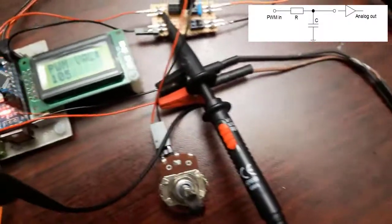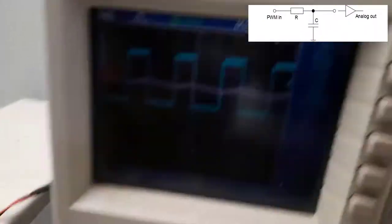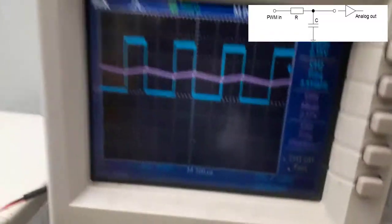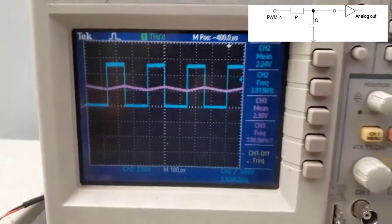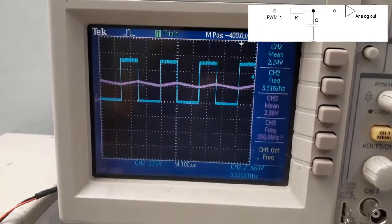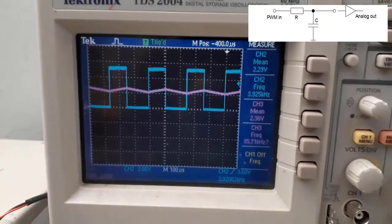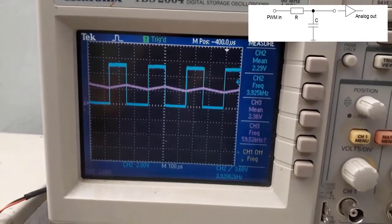If we go quickly under the scope here, we can see the PWM signal. We can see the PWM signal that is coming from the Arduino. That is a signal of 3.9 kilohertz.